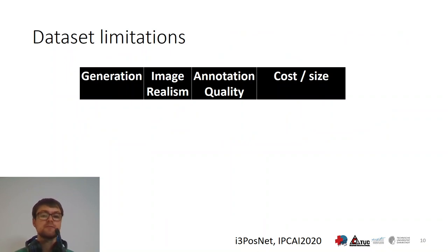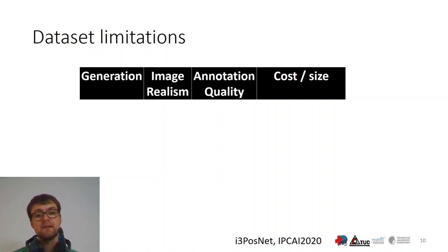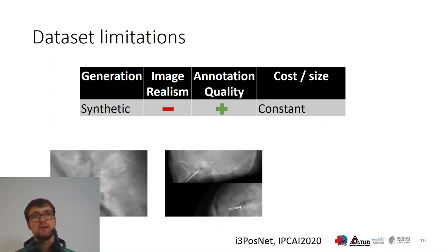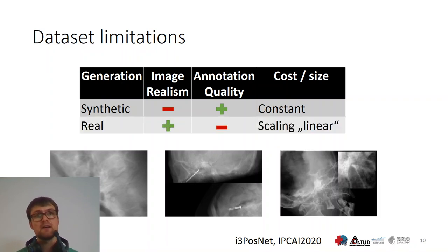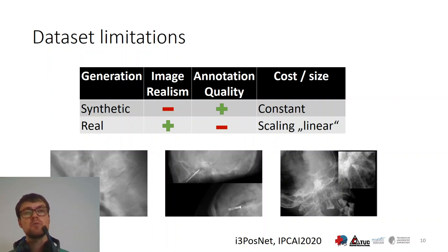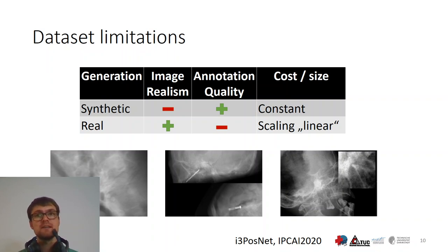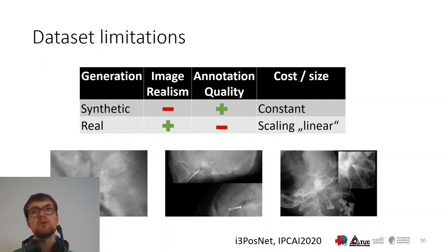Datasets consist of two things: images and annotation. There is a trade-off when we generate a dataset between those two parts. Synthetic images lack image realism, but they provide very consistent, good annotation quality. Real images, on the other hand, are realistic, but they are often limited with respect to annotation quality. The effort required to generate these datasets scales quite differently: for synthetic images, once you have a system going, you can create as many as you want. For real images, the effort scales almost linearly with the number of images you want to create.